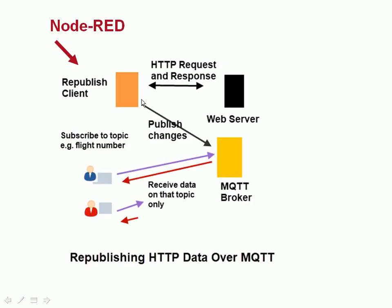So what we're going to do is replace our user with a republishing client — this is going to be Node-RED rather than Python. We're going to pull in the data from the web server, publish that data onto an MQTT broker, and you can then receive that data using an MQTT client. You could also use MQTT over WebSockets so you can still use the browser to receive it — I have done a video on that and I'll put a link in the description below.